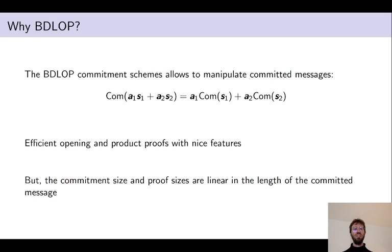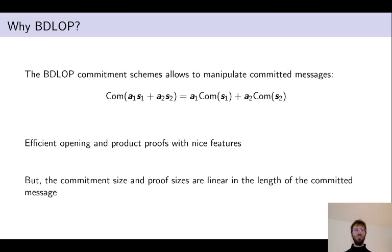The reason why we still use BDLOP over other commitment schemes — including other lattice-based schemes that scale sub-linearly — is that BDLOP has very nice powerful homomorphic properties, like the linear property shown on the slide. Secondly, on top of the linear proof we construct in this paper, there are already very efficient opening and product proofs for this commitment scheme. By an opening proof I mean the basic building block of being able to prove that one knows an opening to a commitment, which is used internally in both product and linear proofs.